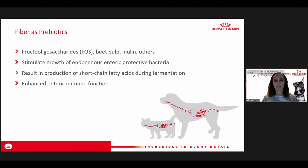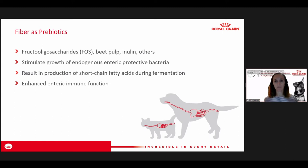Fiber being fermentable is one way to think about it as a prebiotic. Some good examples are fructooligosaccharides, beet pulp, and inulin. These are called prebiotics because they are the precursor for the bacteria themselves, which utilize these prebiotic sources for fermentation and short-chain fatty acid production, which also helps enhance immune function.